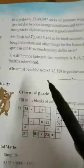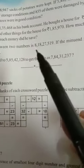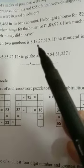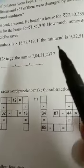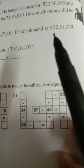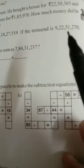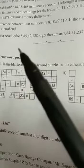Given the difference between the numbers is 8 crore, 18,27,519. If the minuend is 9 crore, 22,51,270, then find the subtrahend. So, here, you have to subtract this difference from the minuend. Then, you will get the subtrahend.